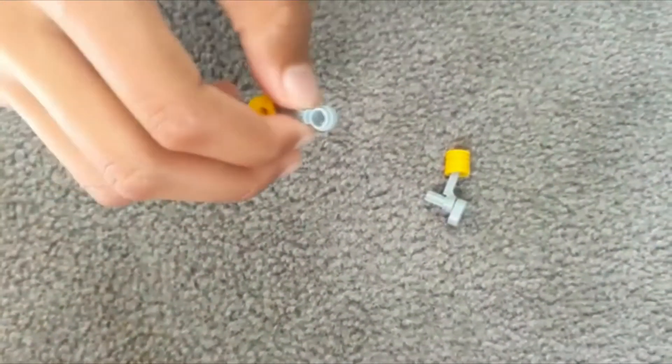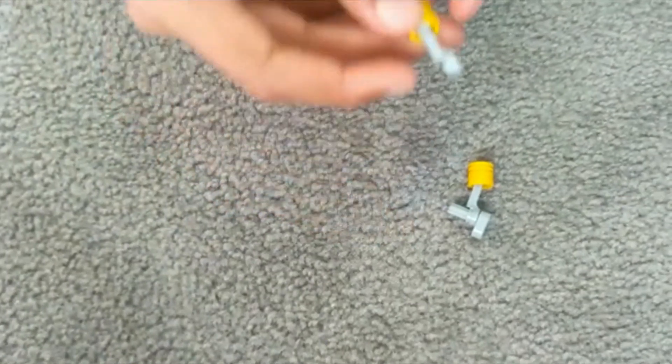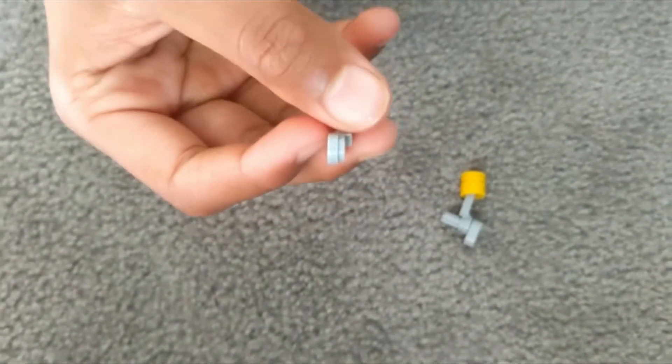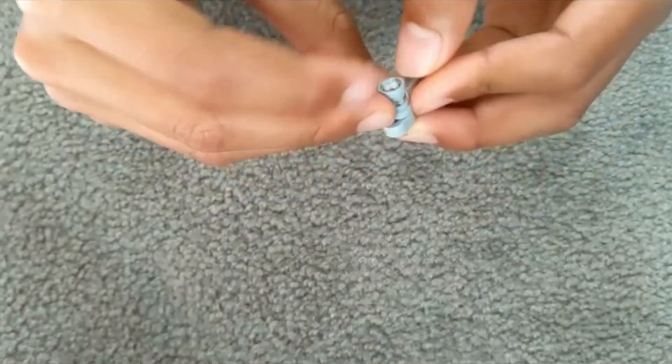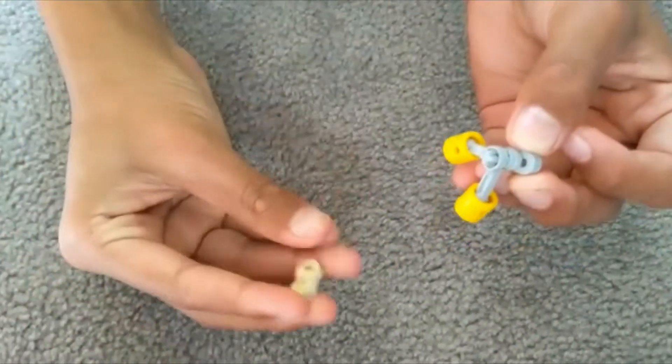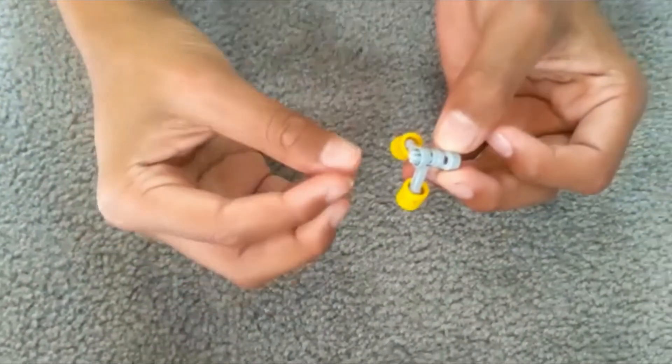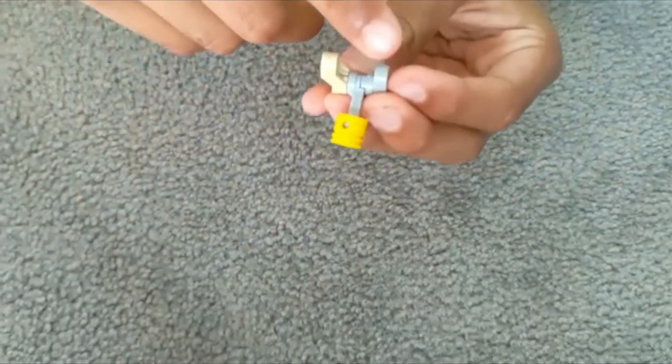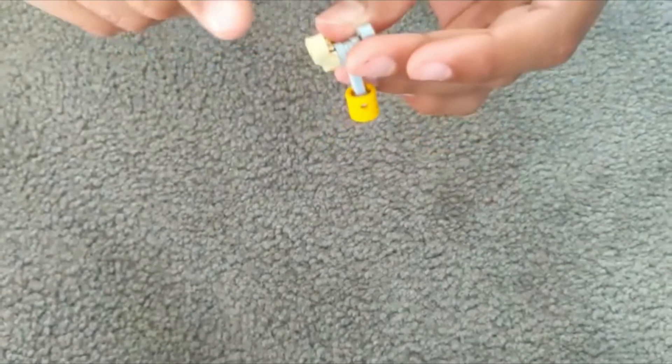Then you get the other piston, but instead of putting it like this, you turn it around and put it like that. As you can see, mine fits in perfectly. Then you get a tan piece and you put it in.